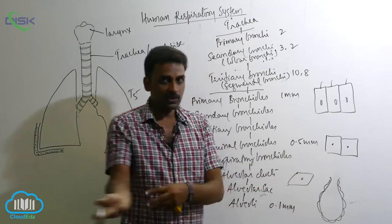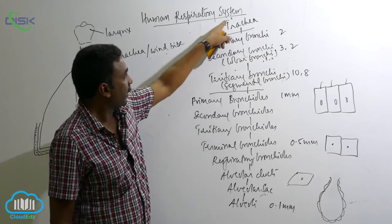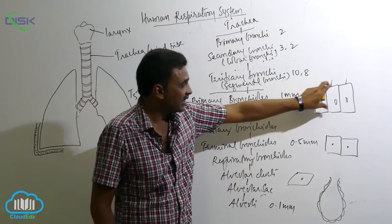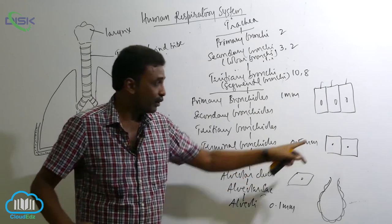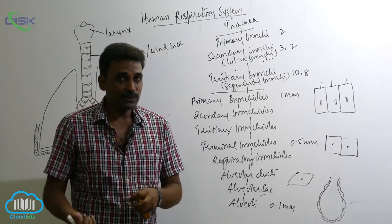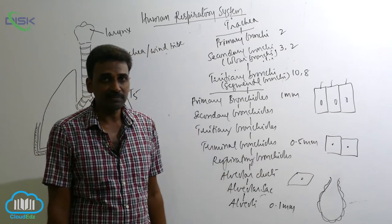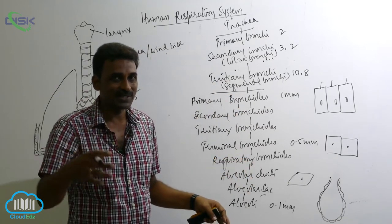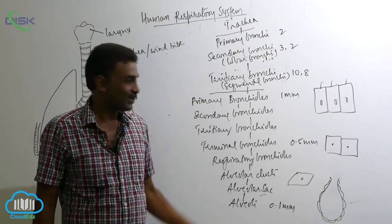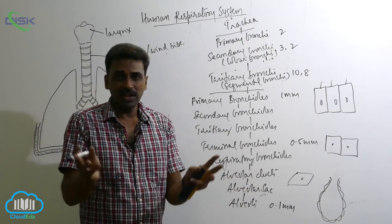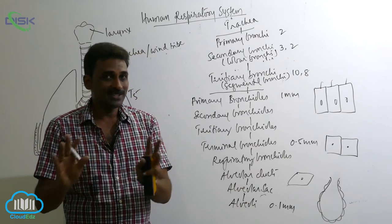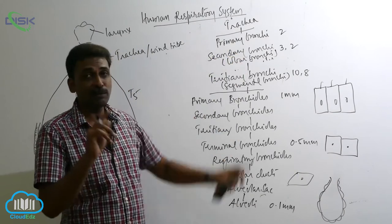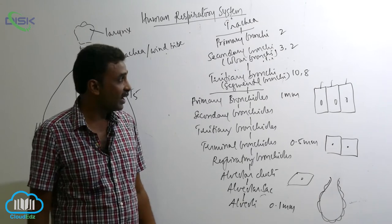So to summarize: trachea and bronchi have pseudostratified ciliated epithelium; initial bronchioles have simple columnar ciliated; later bronchioles become simple cuboidal; and by the time we reach alveoli it becomes simple squamous. Cilia are present in trachea, bronchi, and initial bronchioles, but as the size reduces to simple cuboidal, the cilia gradually disappear. Proceeding down the bronchioles, both cilia and mucus-secreting goblet cells are reduced and absent.